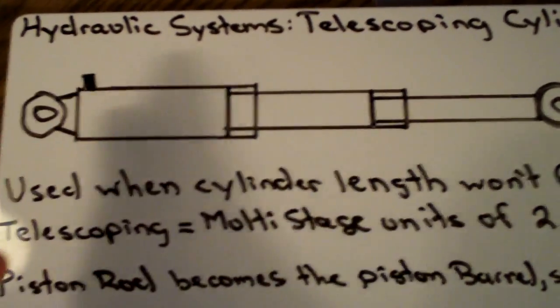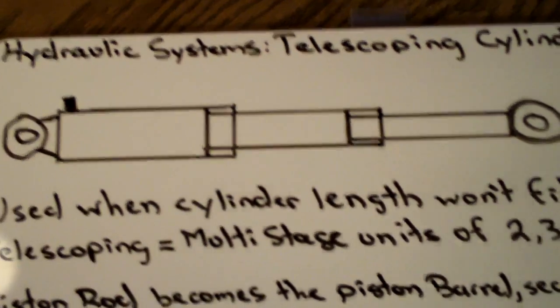So they basically use a telescoping cylinder here, so that that 20 or 30 feet goes down to maybe 8 to 10 feet, and it's more manageable.